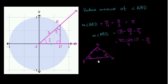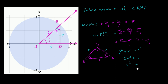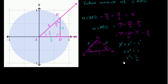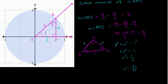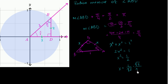If we say that side AD has length x, then side BD also has length x. Now we can use the Pythagorean theorem: x squared plus x squared equals 1 squared, so 2x squared equals 1, meaning x squared equals 1 over 2. Taking the principal root, x equals 1 over the square root of 2. Rationalizing the denominator by multiplying by root 2 over root 2 gives us x equals square root of 2 over 2.